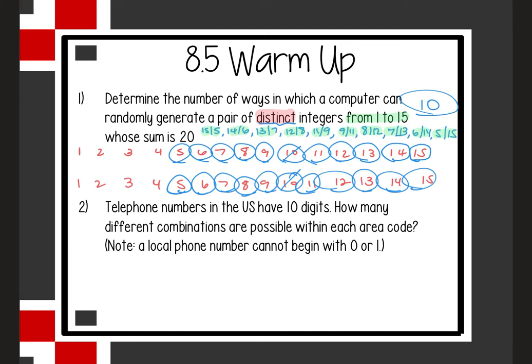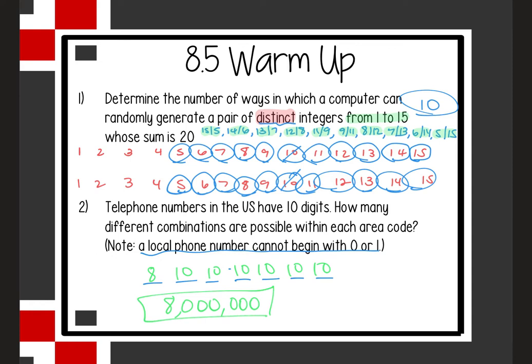Number 2: telephone numbers in the U.S. have 10 digits. How many different combinations are possible within each area code? Within the area code there would be 7 digits. A local phone number can't start with a 0 or 1, which means there are 8 possibilities the first time, and then 10 for each digit after that — which means there are 8 million possible phone numbers within an area code.